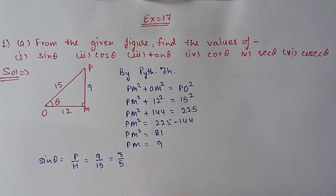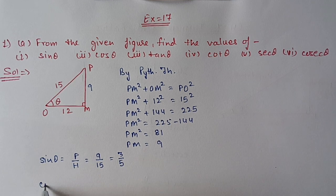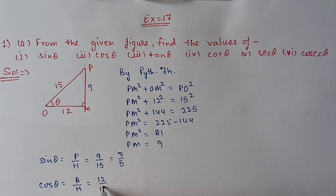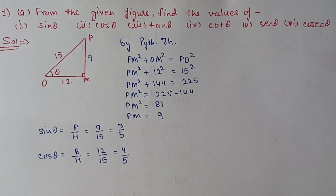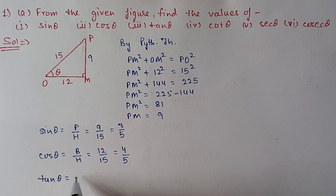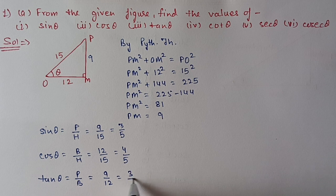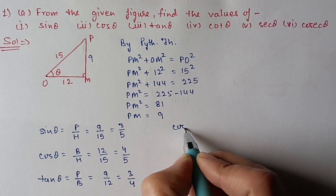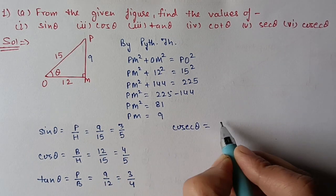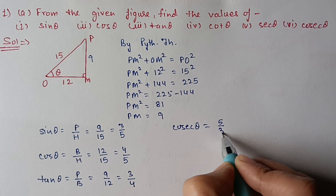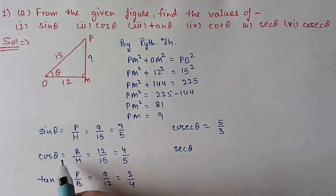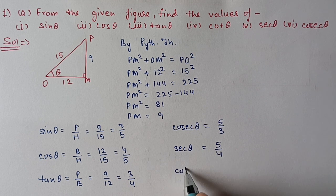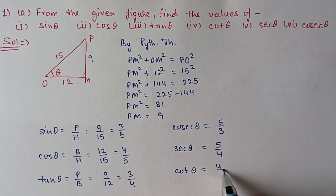We got perpendicular = 9. Now we can find the ratios. Sin θ = perpendicular/hypotenuse = 9/15 = 3/5. Cos θ = base/hypotenuse = 12/15 = 4/5. Tan θ = perpendicular/base = 9/12 = 3/4. Cosec θ is the reciprocal of sin θ = 5/3. Sec θ is the reciprocal of cos θ = 5/4. Cot θ is the reciprocal of tan θ = 4/3.